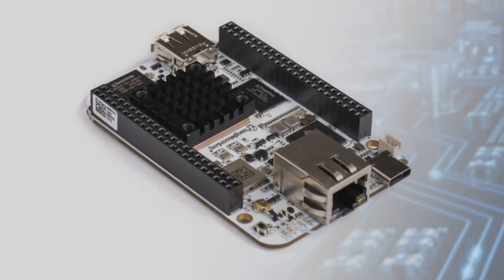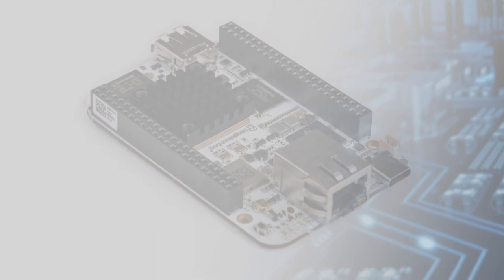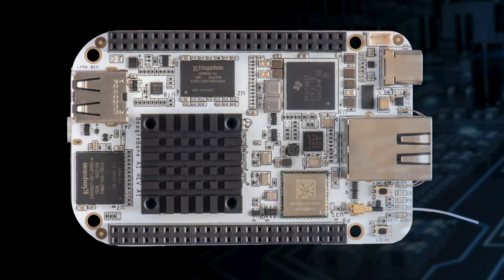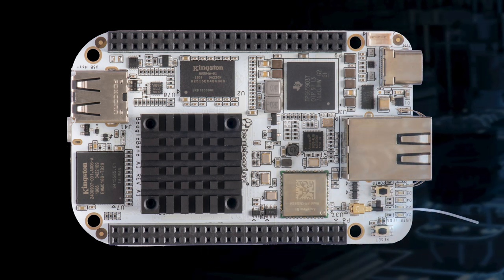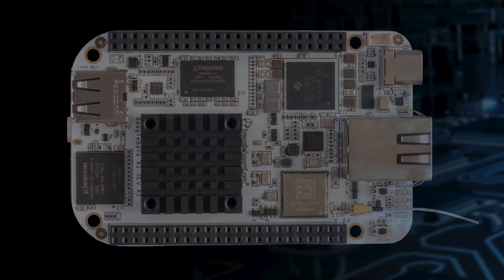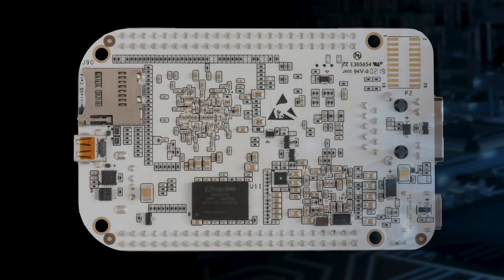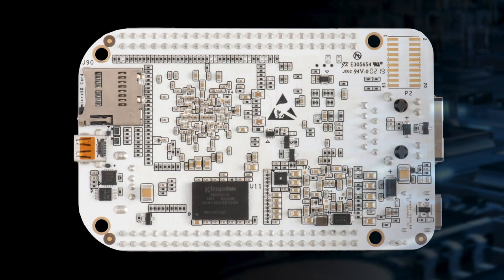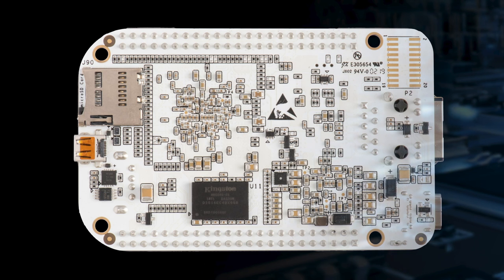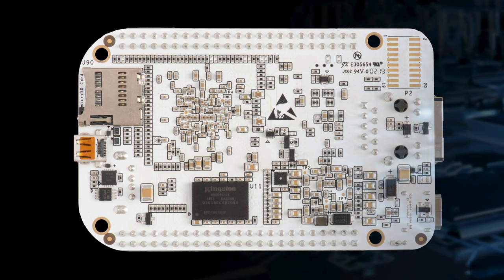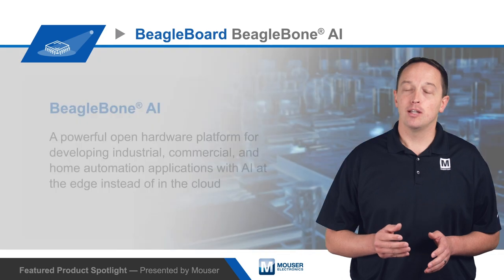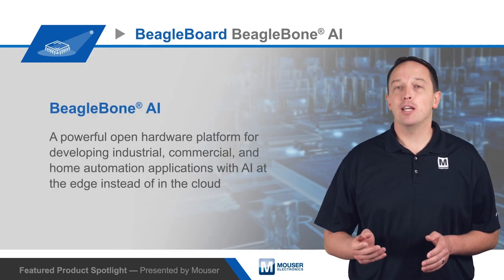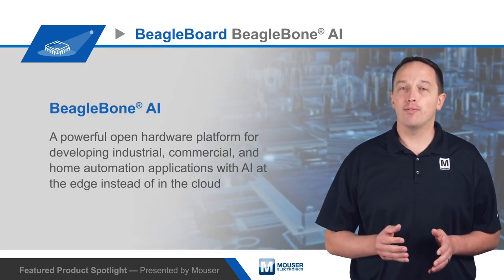The BeagleBone AI offers BeagleBone Black header and mechanical compatibility for use with existing hardware. It includes Gigabit Ethernet, USB Type-A host, and micro HDMI connectors. It also has USB Type-C host and client interfaces and can be powered over the USB Type-C connection. The board includes 1 GB of DDR3-LD RAM, 16 GB of eMMC flash, and a micro SD slot for additional storage, and it has 802.11ac dual-band Wi-Fi and Bluetooth.